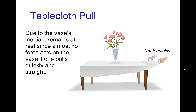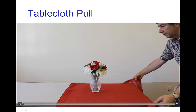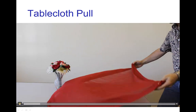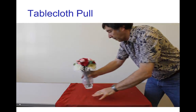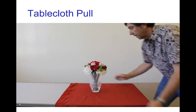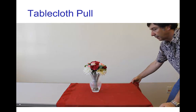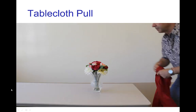So in this case, we have a vase of flowers, and if we have a tablecloth that is pulled out from underneath the vase quickly, then there's only a very small force acting on the vase, and so the inertia of the vase keeps it in place. Let's look at a quick video of that. Ta-da!